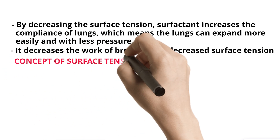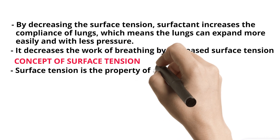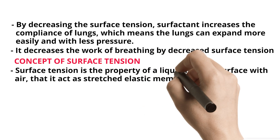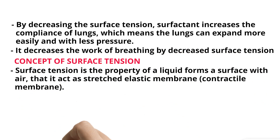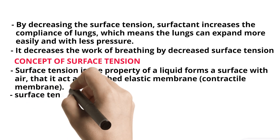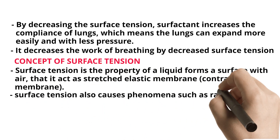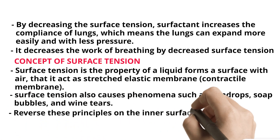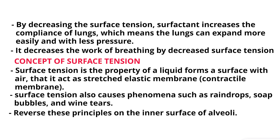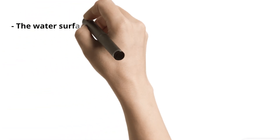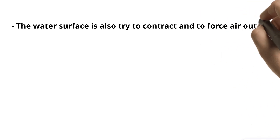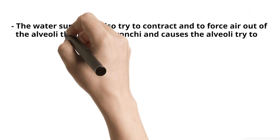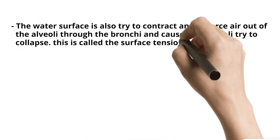Concept of Surface Tension. Surface tension is the property of a liquid at its surface with air, causing it to act as a stretched elastic, contractile membrane. Surface tension also causes phenomena such as raindrops, soap bubbles, and wine tears. When these principles apply to the inner surface of alveoli, the water surface tries to contract and to force air out of the alveoli through the bronchi, causing the alveoli to try to collapse. This is called the Surface Tension Elastic Force.